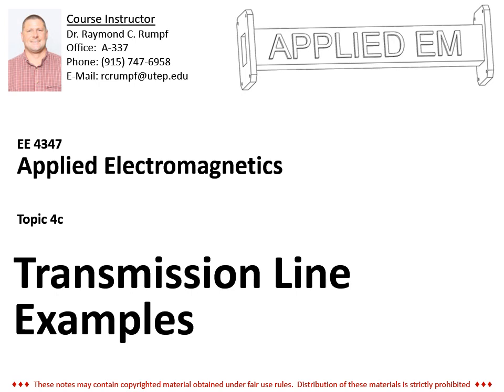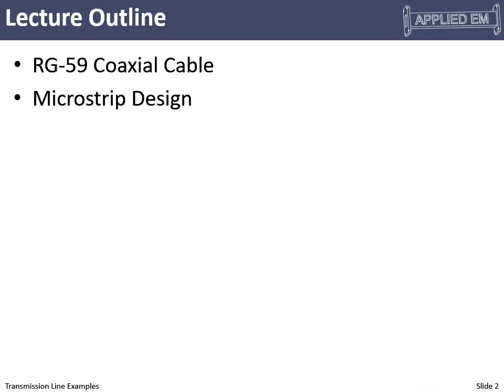Transmission line examples. We'll put a pause button on introducing new material for transmission lines in this video and just work through some examples. One is the RG-59 coaxial cable. This is the cable that you would use to plug into the back of your television before everything became digital. And then also a microstrip design example, providing equations for calculating the characteristic impedance of microstrips and how to design them.